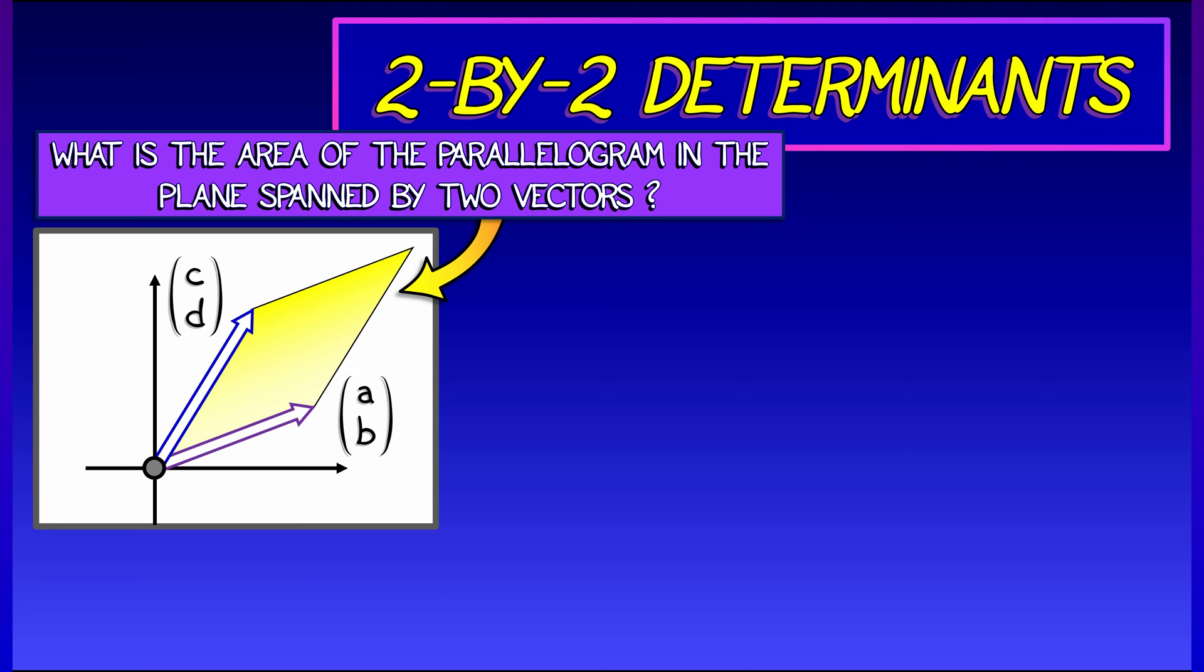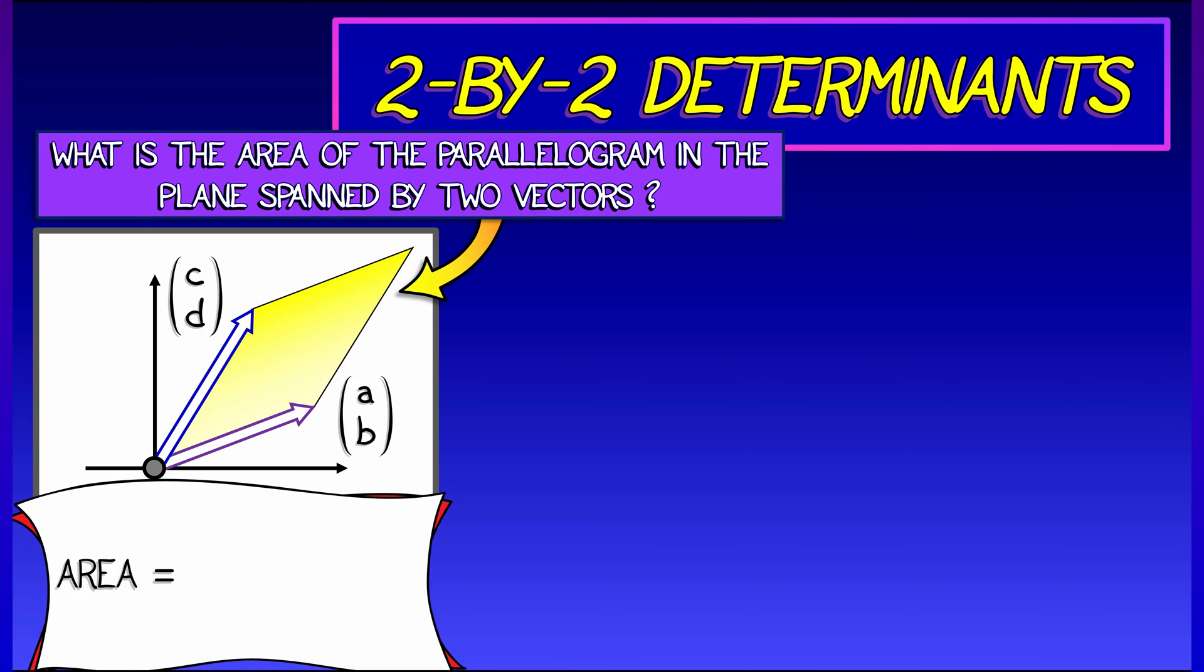Okay. Let's say we have two vectors, a, b, and c, d in the plane. I claim that the area of the parallelogram spanned by those vectors is the determinant of the two by two matrix you get by stacking those vectors together as columns. So a, b, and c, d, and then take the absolute value of that determinant.